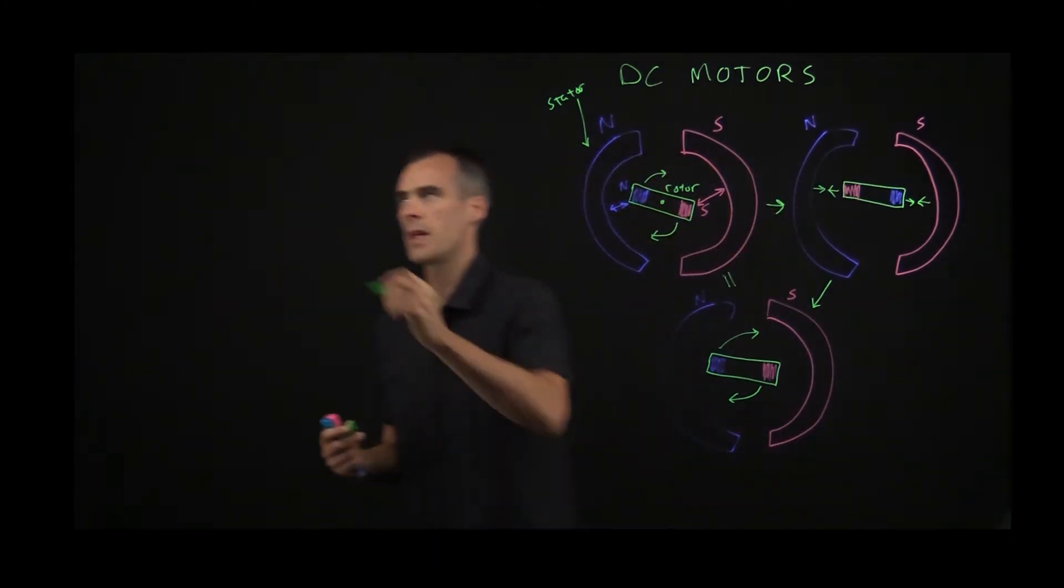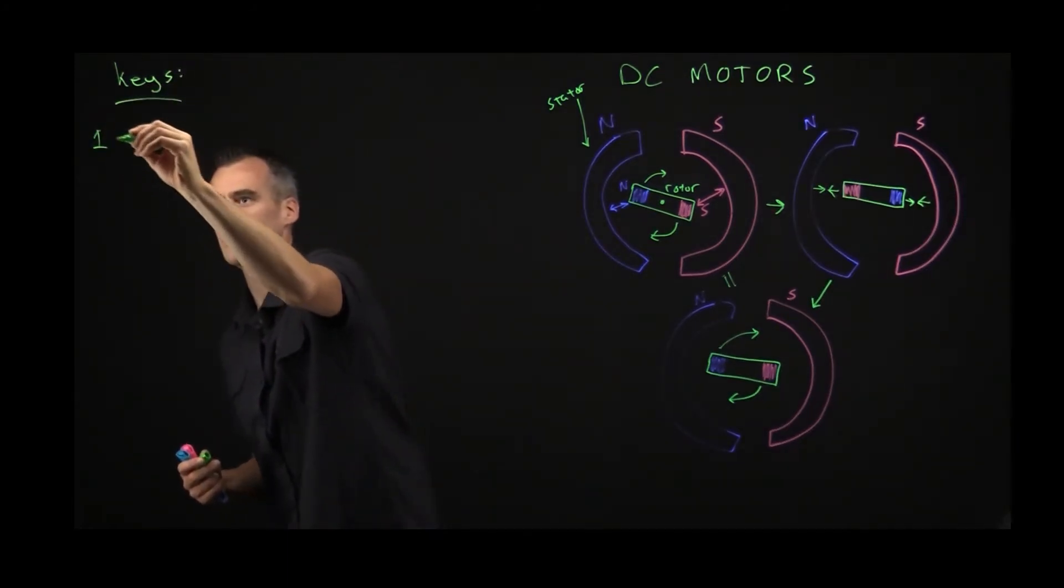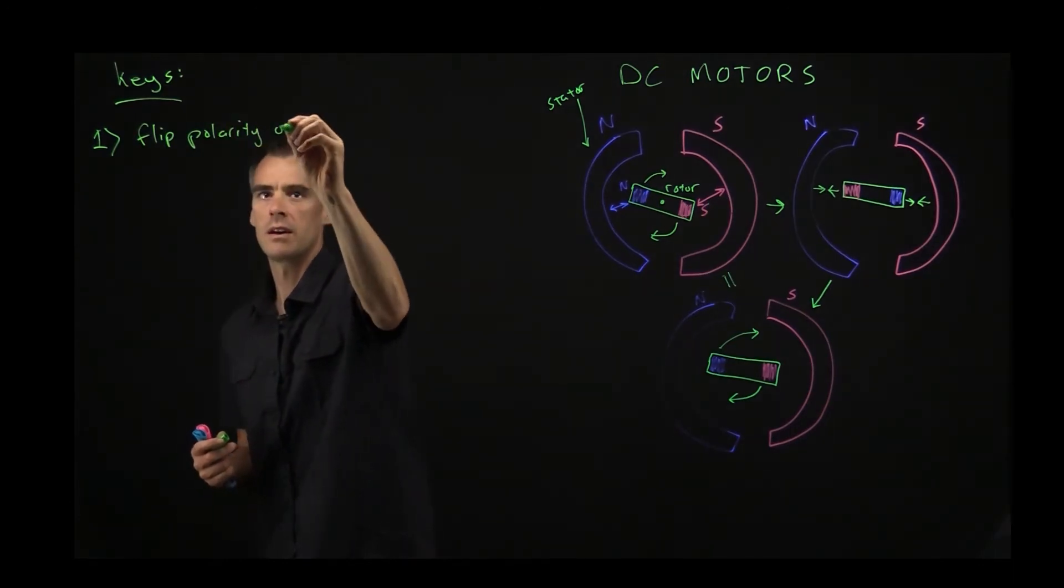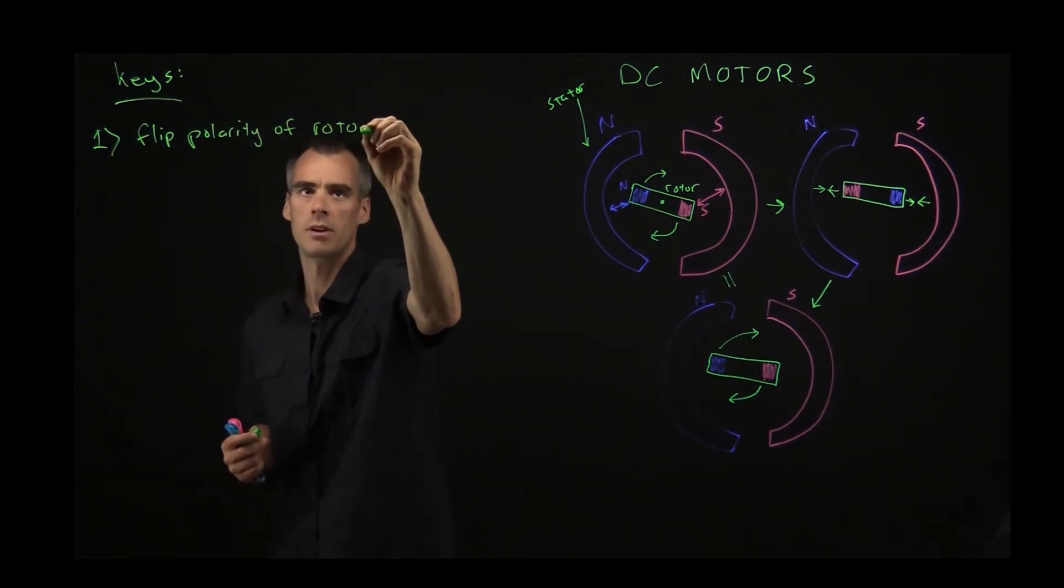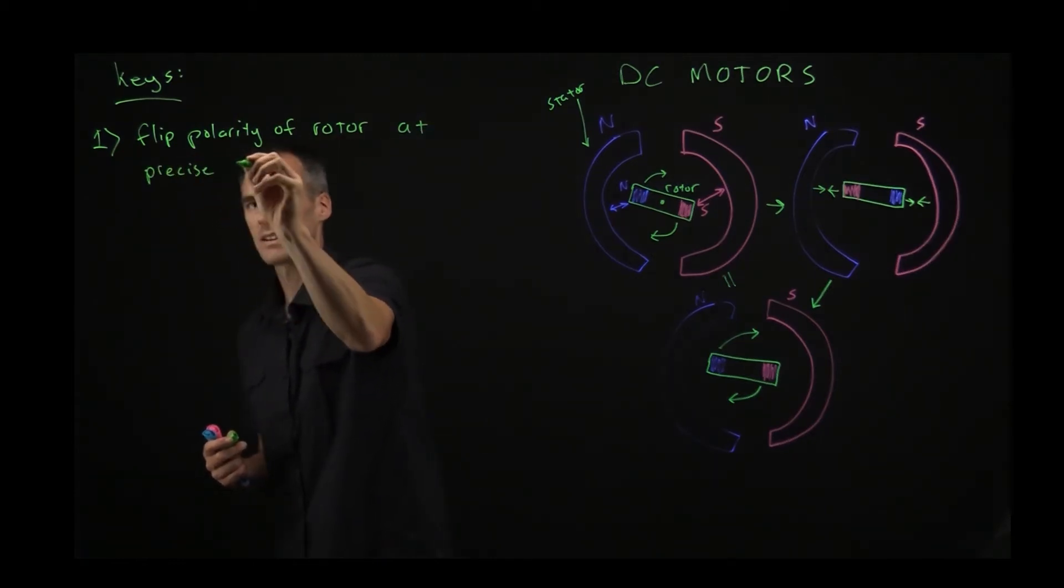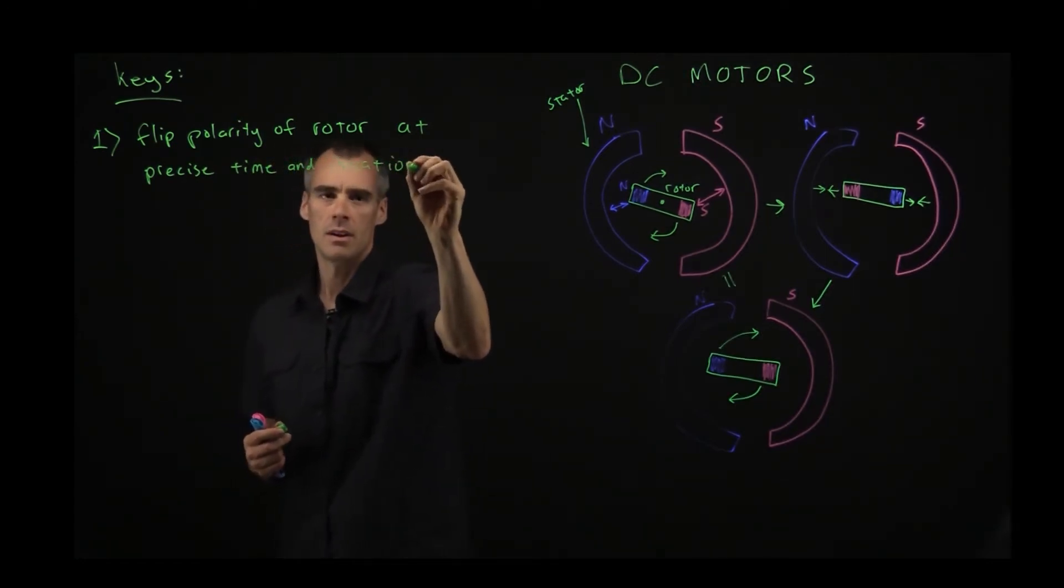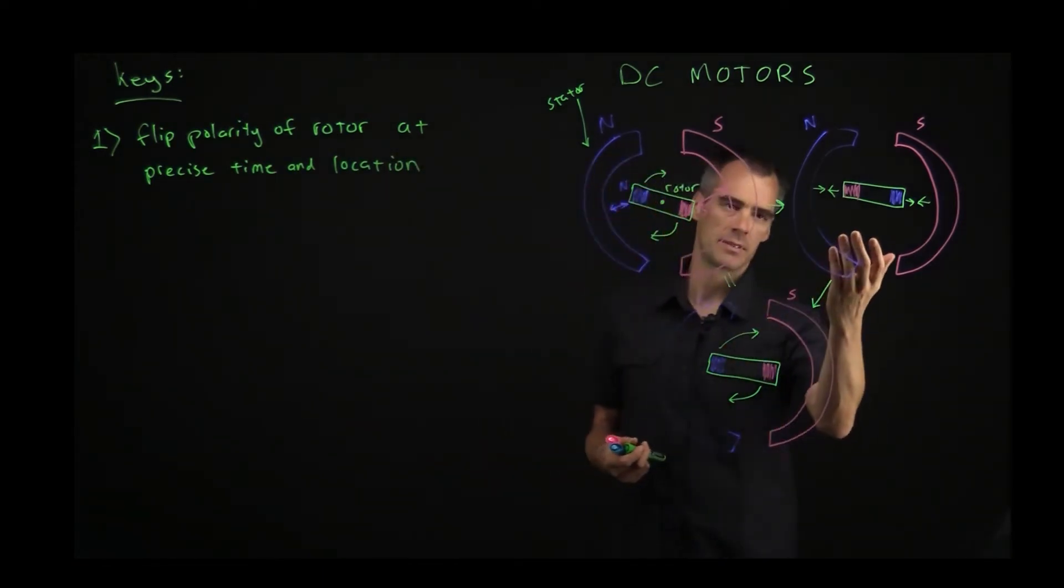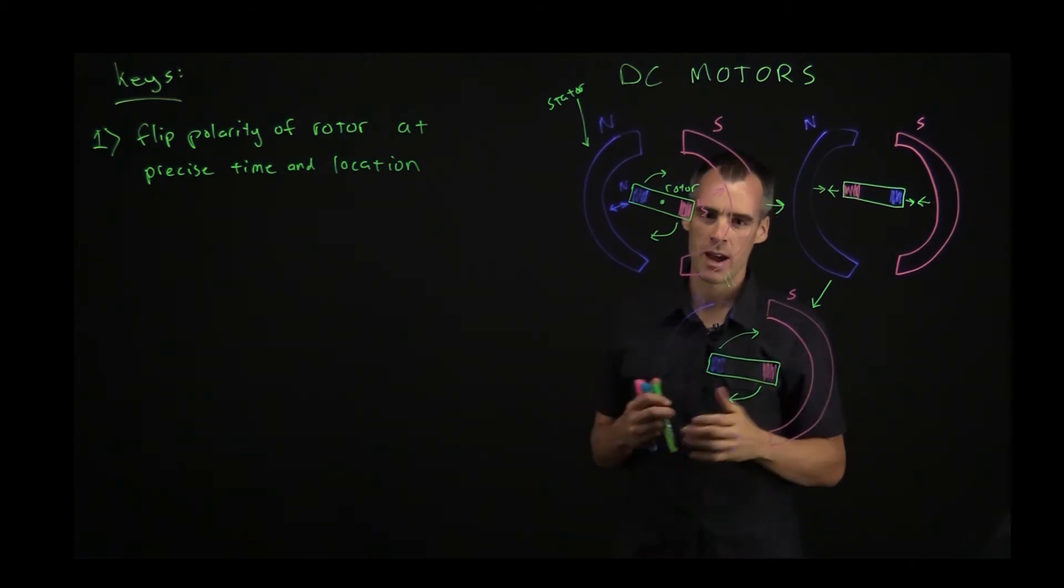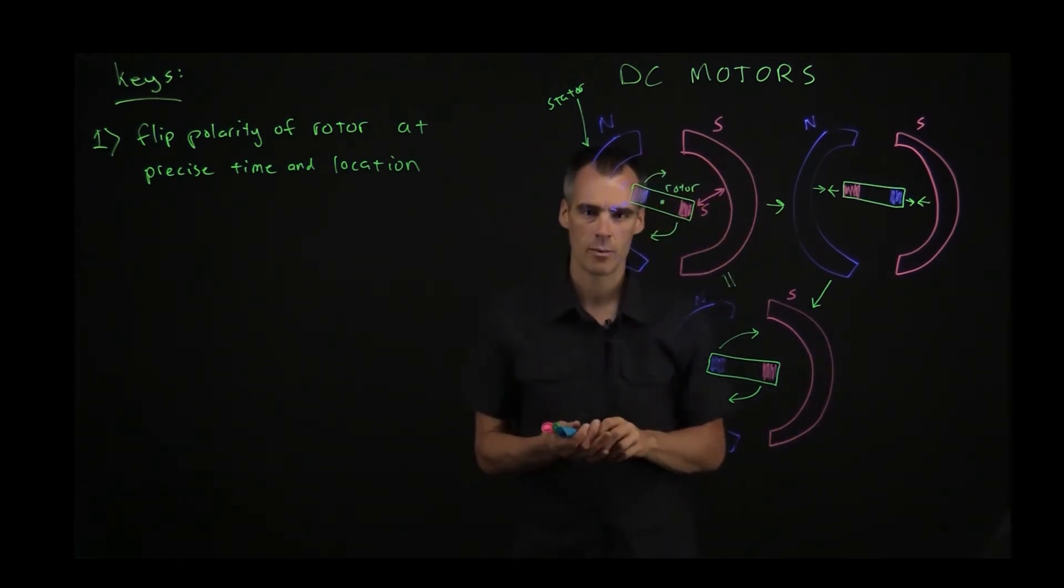We'll call this key one. So let's just say a bunch of keys up here to how this operates. And number one is going to be flip polarity of rotor at precise time and location. So how are we going to do that? I mean, you can't just, if it's a magnet, if it's a standard magnet, you can't just flip its polarity automatically, right? But you can do it with an electromagnet. So let's go ahead and see how that works.